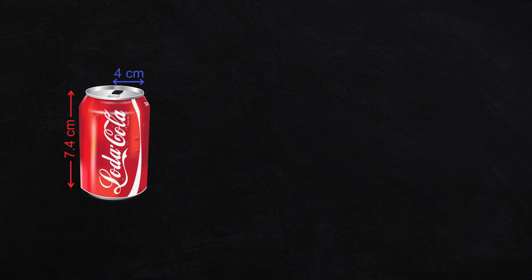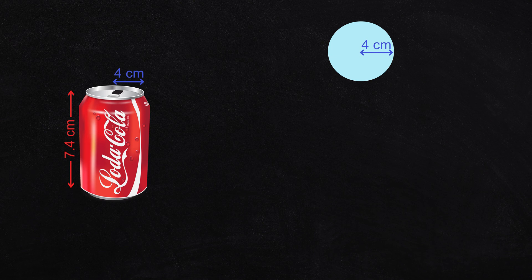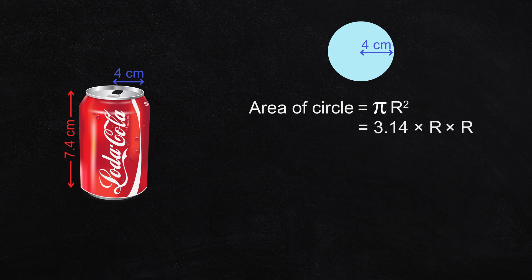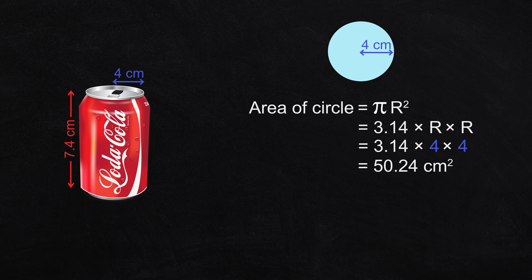Now we'll calculate the volume of this cylinder, also called a circular prism. The top and bottom is a circle of the same size. The first rule is: area of circle equals pi r squared. That's 3.14 times the radius times the radius again. That equals 3.14 times 4 times 4, which is 50.24 square centimeters.